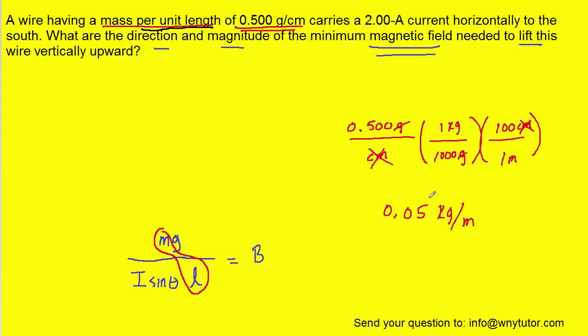This is the value we're going to substitute in for m over L. If you prefer, you can think of that as 0.05 kilograms over one meter. So you're plugging in 0.05 kilograms for the mass and one meter for the length.